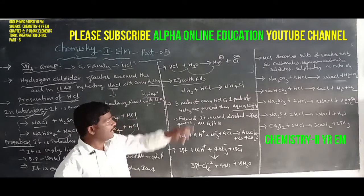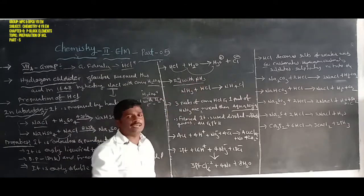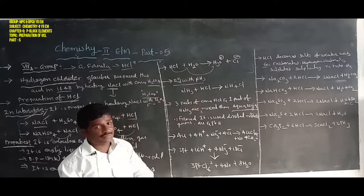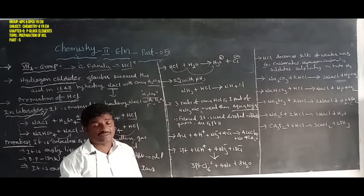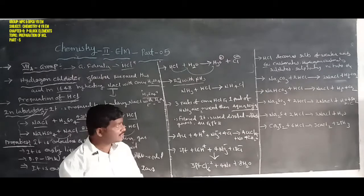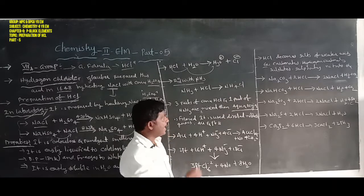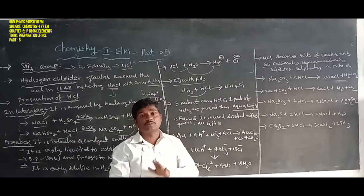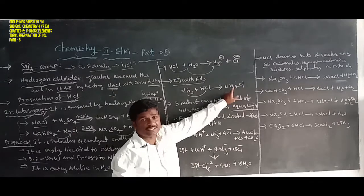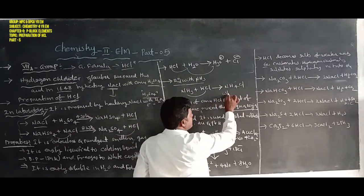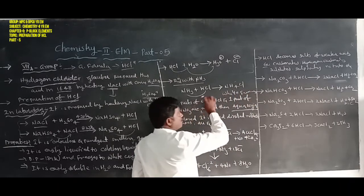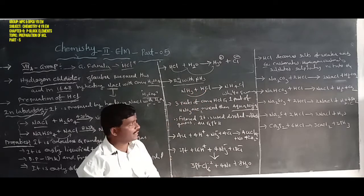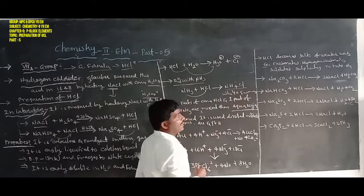Another property: reaction with ammonia (NH3). Hydrochloric acid treated or combined with ammonia forms ammonium chloride (NH4Cl), also known as white fumes. This white fume of ammonium chloride is the product of the reaction between hydrochloric acid and ammonia.